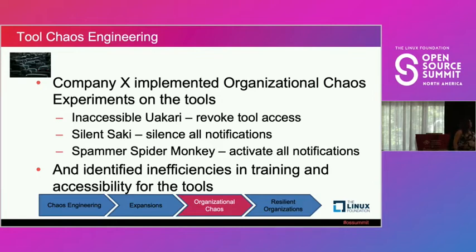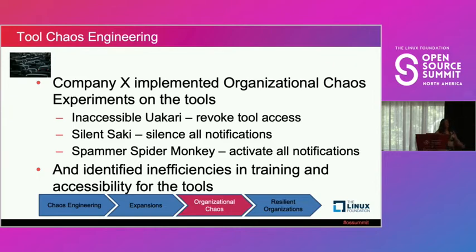When Company X ran tool experiments on their access process tools, they noticed inefficiencies in training — people lost access and had no clue where to go to try to get it restored. That's a problem, because it threw a pretty big wrench into the ability to move the process through.